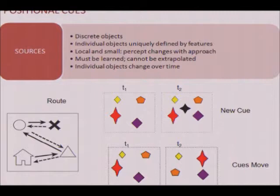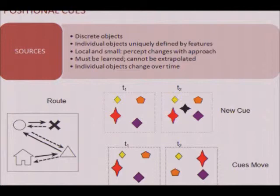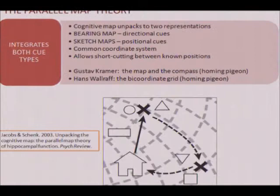These local cues are more subject to change over time, where cues might be added to an array or cues might move around in an array. François Schenck and I in 2003 suggested that the cognitive map is the computation that emerges from the flexible use of these two classes of cues — directional and positional.